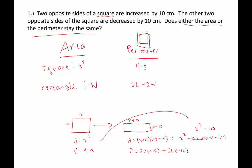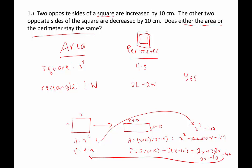What about the perimeter? We get 2 times (x plus 10) plus 2 times (x minus 10), which gives 2x plus 20 plus 2x minus 20. Those constant terms cancel, leaving 4x — which does match the square's perimeter. So does either the area or the perimeter stay the same? Yes, the perimeter does.